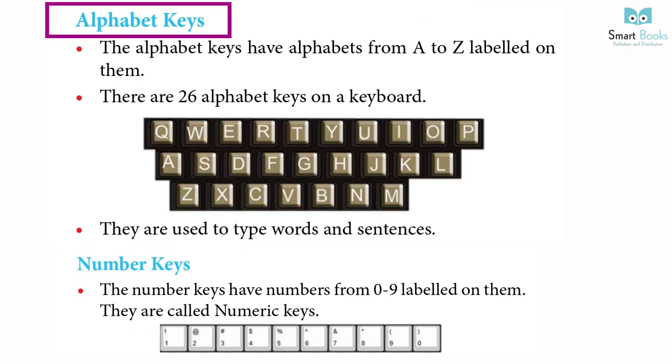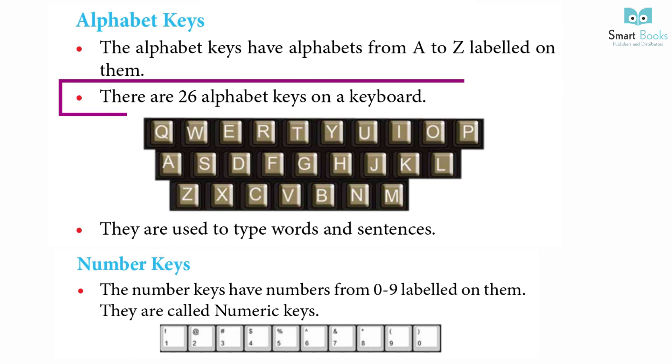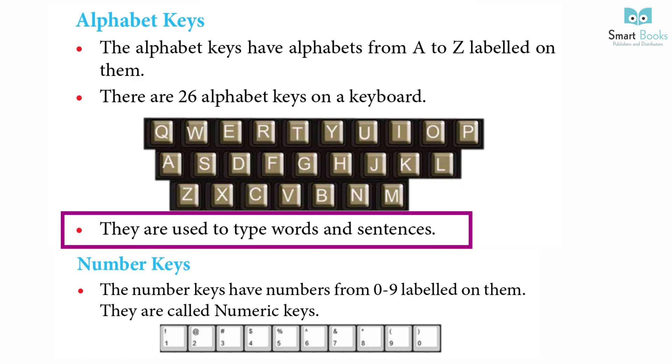Alphabet keys: The alphabet keys have alphabets from A to Z labeled on them. There are 26 alphabet keys on a keyboard. They are used to type words and sentences.